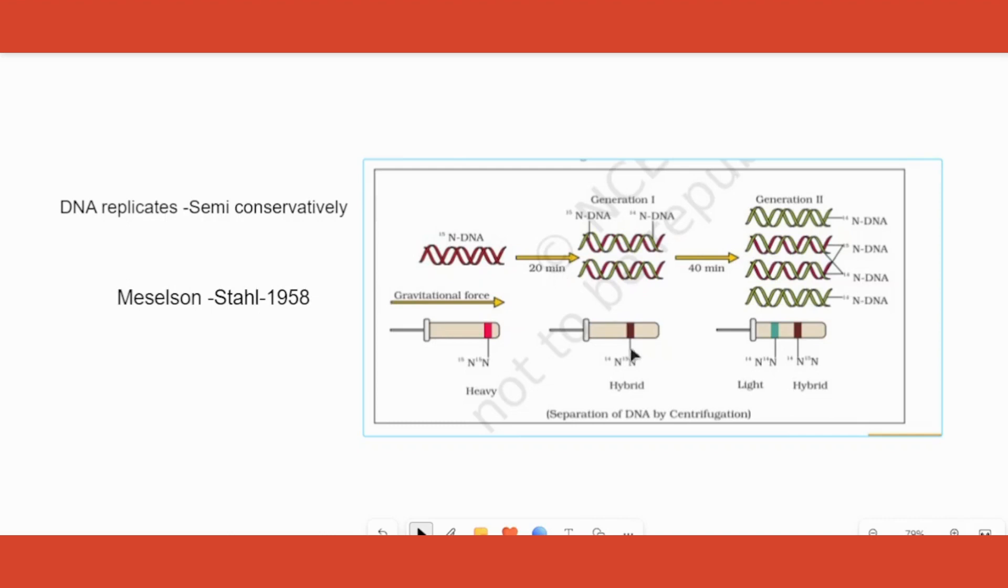After 20 minutes, when they checked after putting in the N14 medium, they found that the DNA they got had two strands. Either way, the DNA would always have two strands. In this case, one strand among the two was having N15 as its nitrogen content, and the other strand was N14 as the nitrogen content.